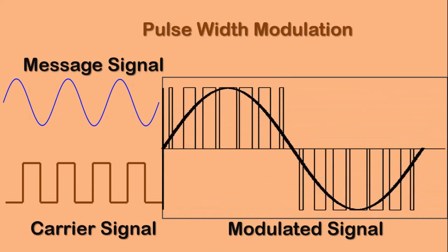Moving to the next modulation technique, pulse width modulation. In PWM the width of the modulated pulses varies in proportion with the amplitude of the modulating signal. The amplitude and frequency of the PWM wave remain constant — only the width changes. The leading edges of PWM signals are always generated at fixed time instants, however the occurrence of the trailing edges depends on the instantaneous amplitude of the message signal.